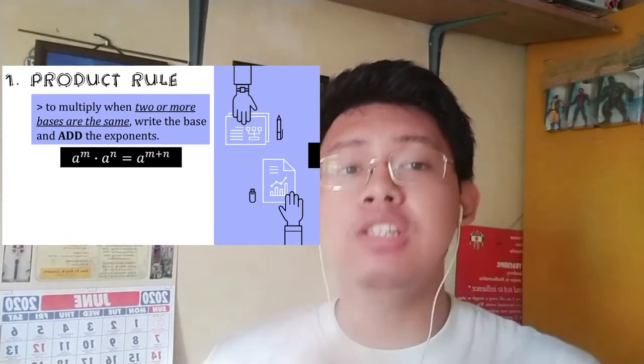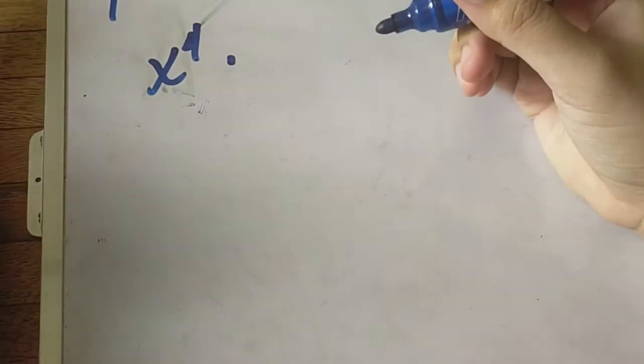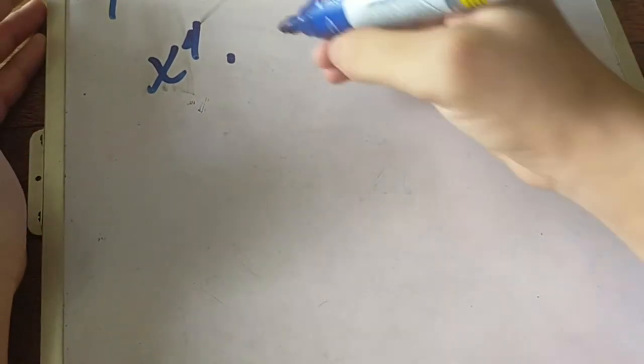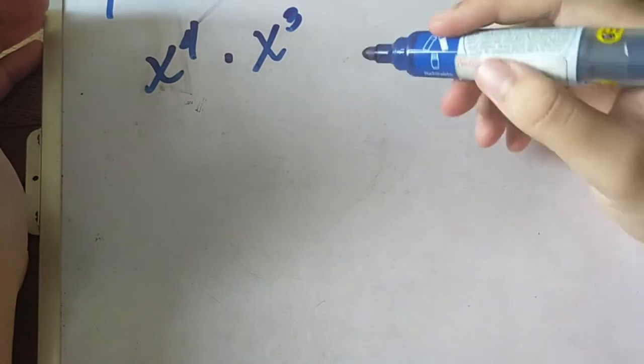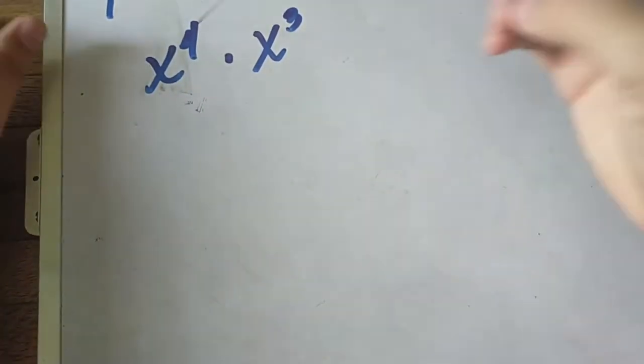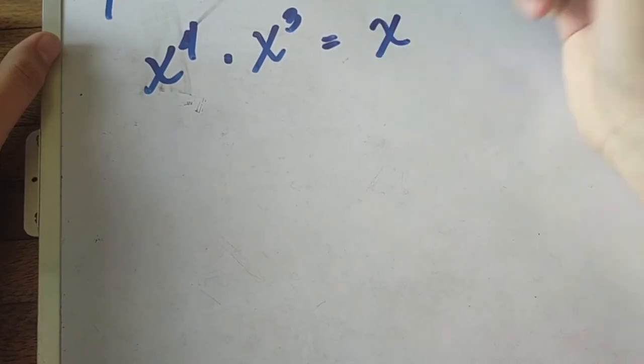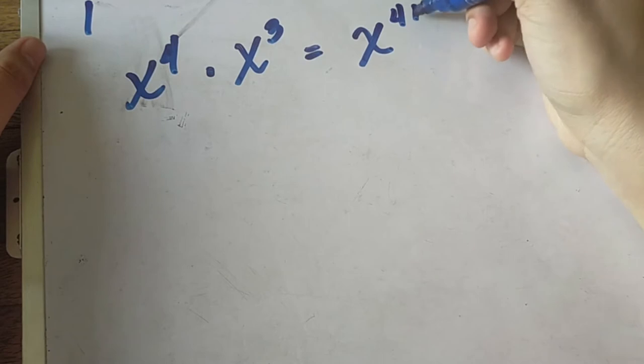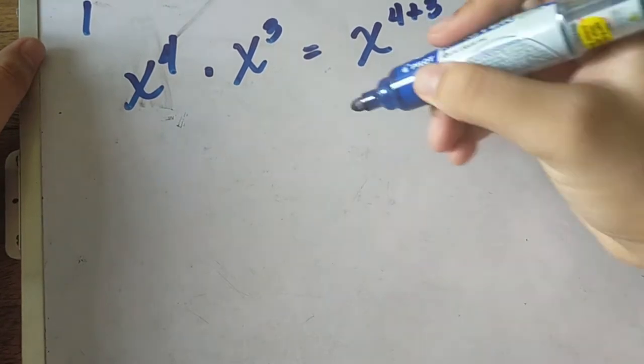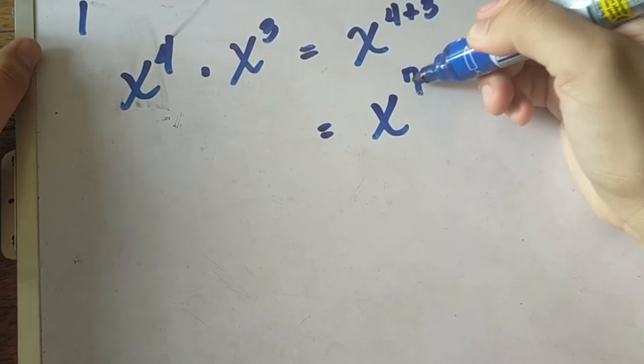Now let's have an example. For example, we have x raised to 4 times x raised to 3. Since they have the same base, we are going to copy the base and we are going to add the exponent. 4 plus 3, so the answer will be x raised to 7.